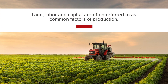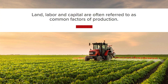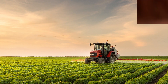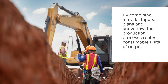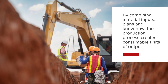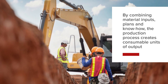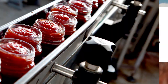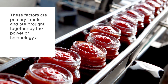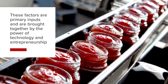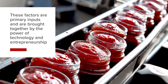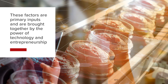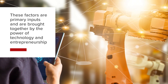Land, labour and capital are often referred to as common factors of production. By combining a variety of material inputs using plans and know-how, the production process creates consumable units of output. These factors are primary inputs and are generally brought together by the power of the evolved factors of technology and entrepreneurship.